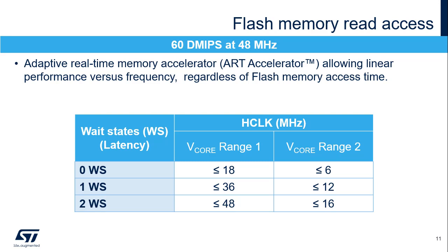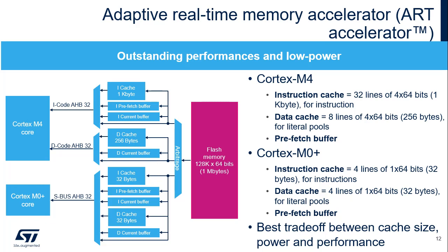Thanks to the adaptive real-time memory accelerator — the ART accelerator — the program can be executed with 0 wait states independent of the clock frequency. This provides an almost linear performance in relation to frequency and allows reaching 60 Dhrystone MIPs at 48 MHz. The ART accelerator brings outstanding performance and reduces dynamic power consumption. It consists of a Cortex-M4 1-kilobyte instruction cache, 256-byte data cache, and a pre-fetch buffer, and a Cortex-M0+ 32-byte instruction cache, 32-byte data cache, and a pre-fetch buffer.